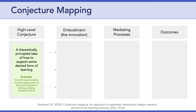Embodiment usually involves specifying four kinds of elements. The first element has to do with the tools and materials of the solution — this might include software programs, instruments, manipulatives, media, or other resources. These are the things we usually have in mind when thinking about designing an intervention. The second element, task structures, describes the tasks learners are expected to do in your solution: what are the goals of the tasks, the criteria, the standards, and so on.